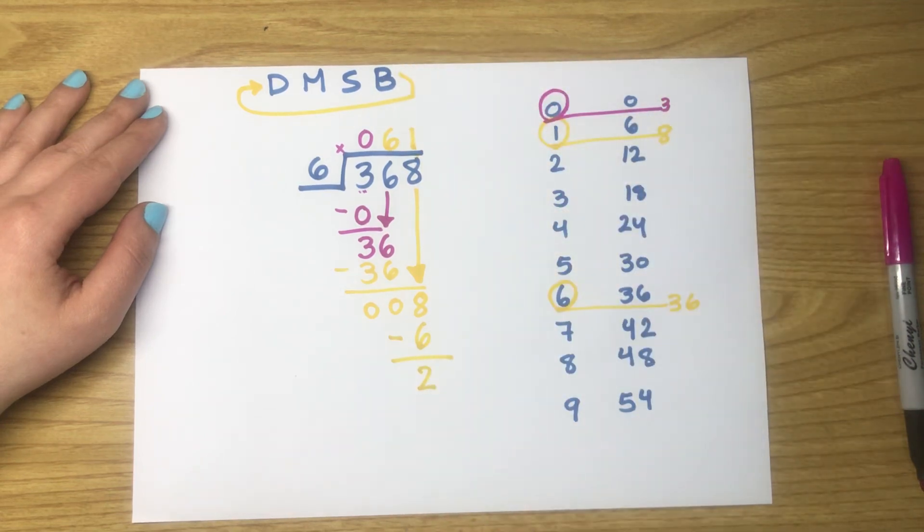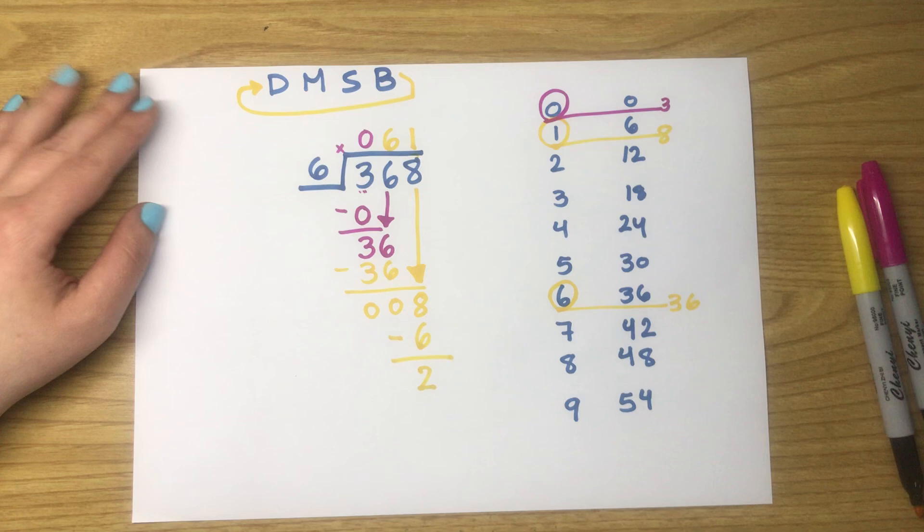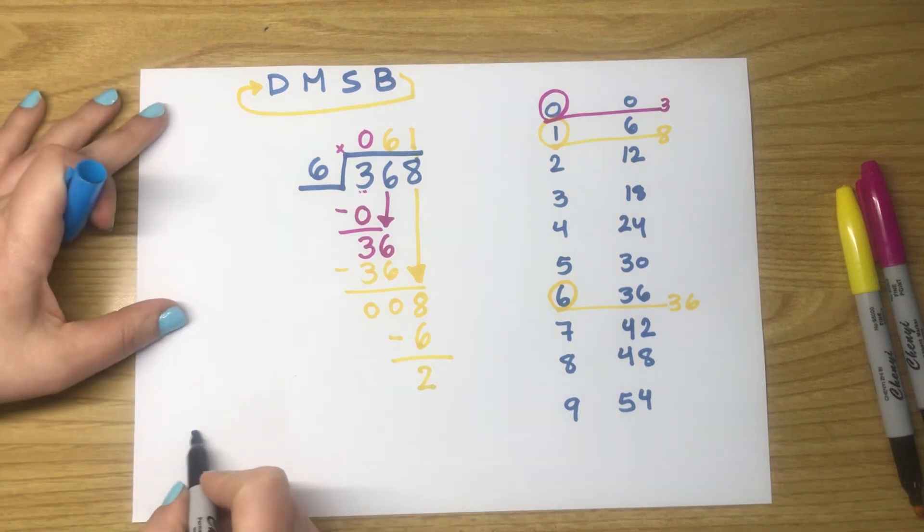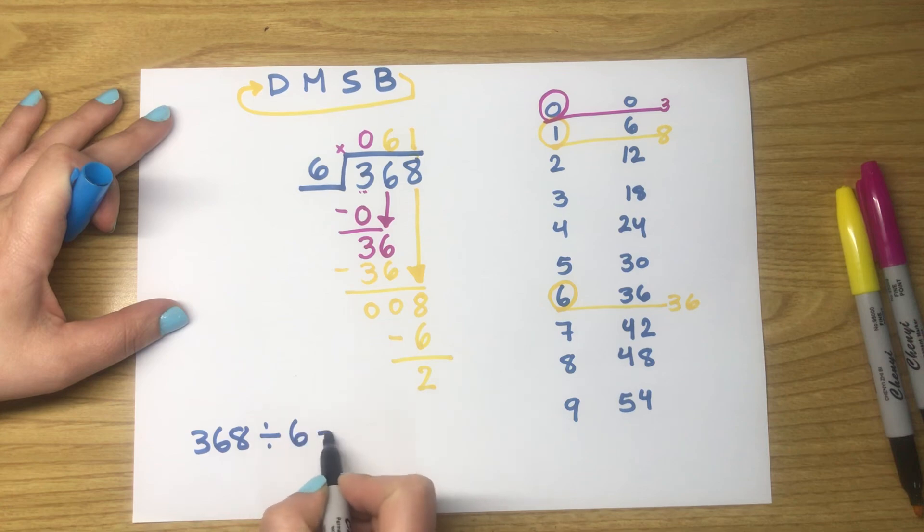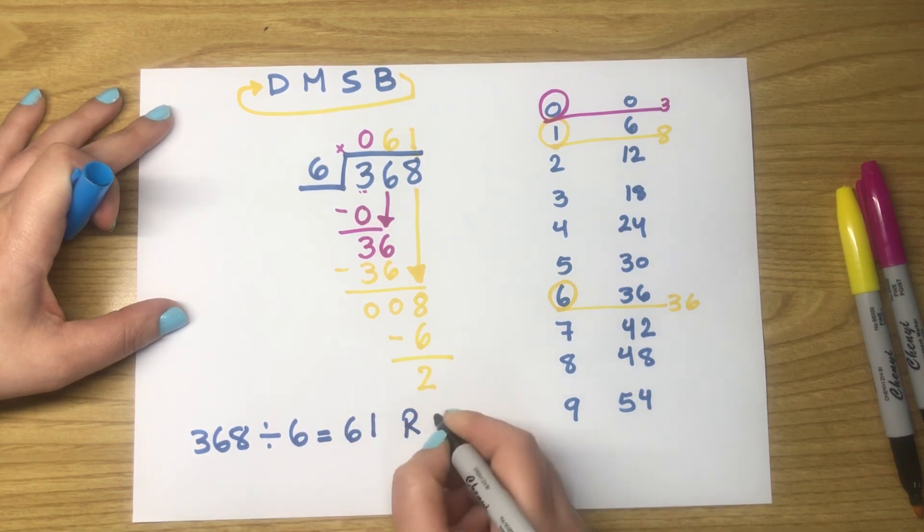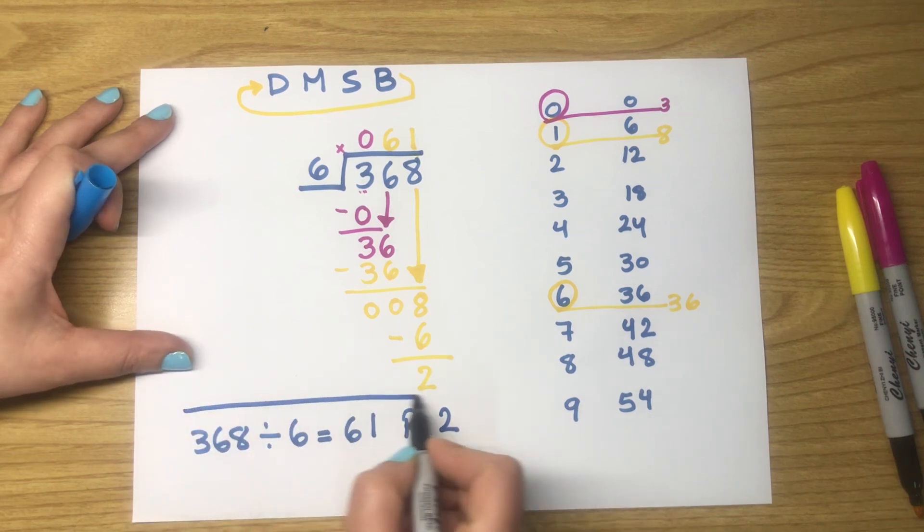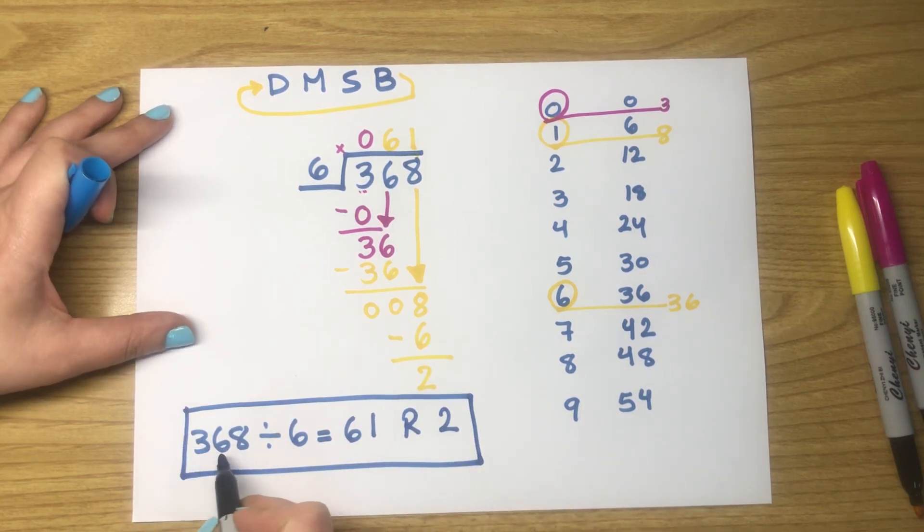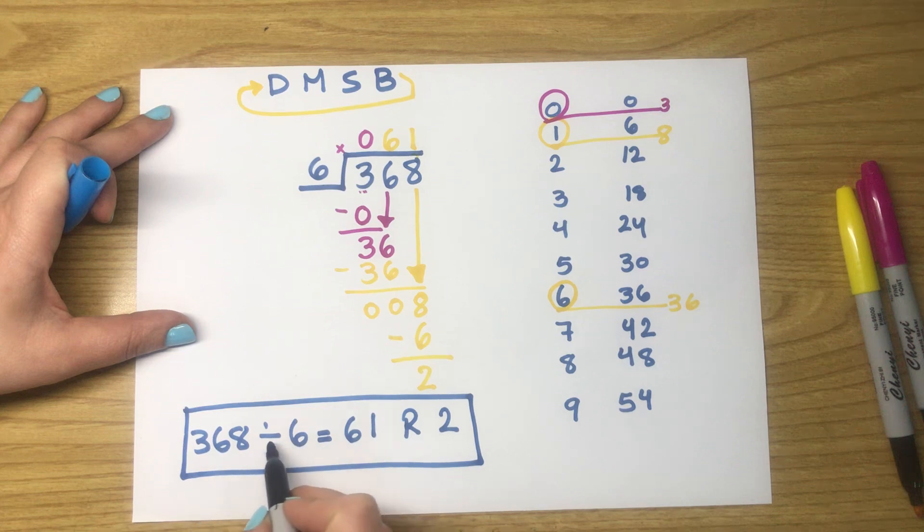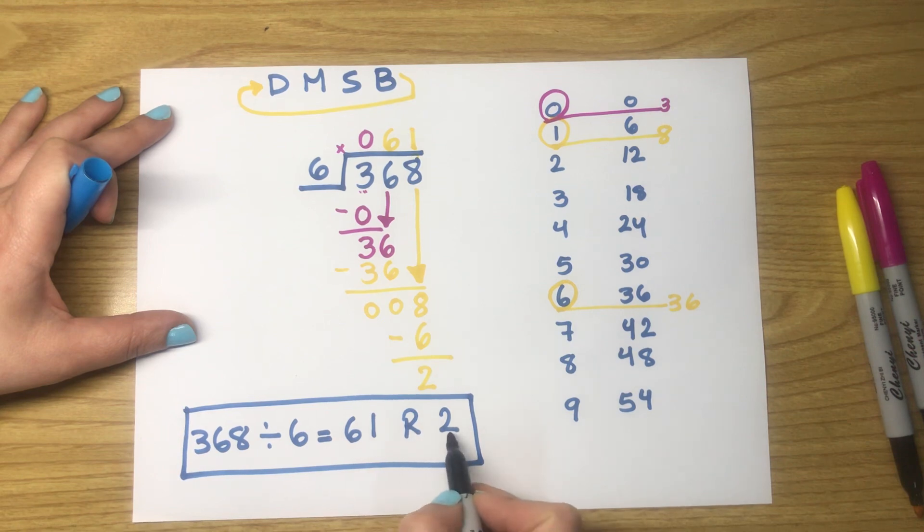368 divided by 6 equals 61 remainder 2. This is the dividend, divided by 6, which is the divisor, equals the quotient 61, and the remainder is 2.